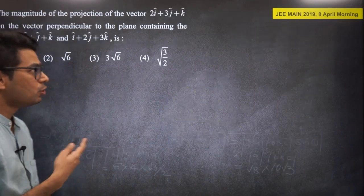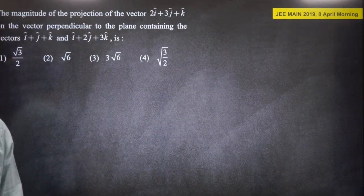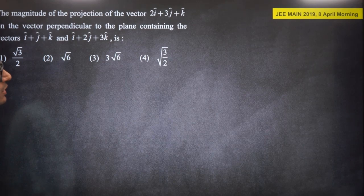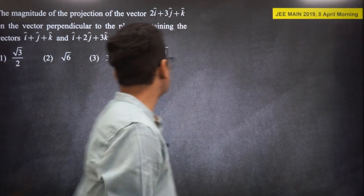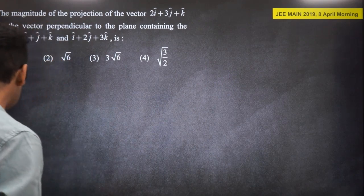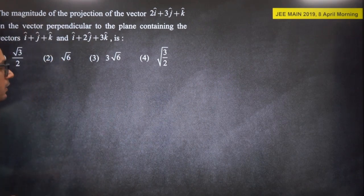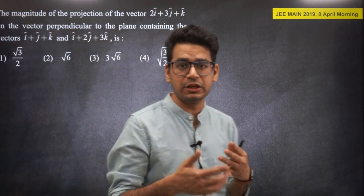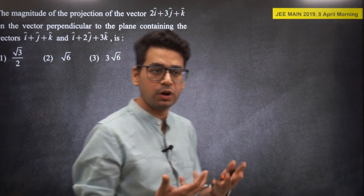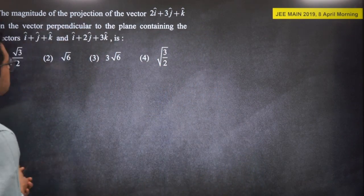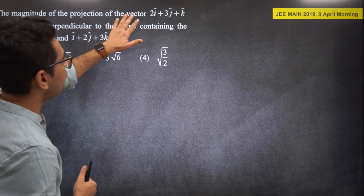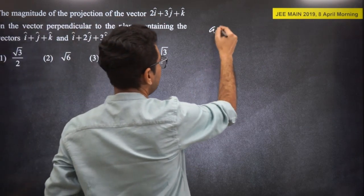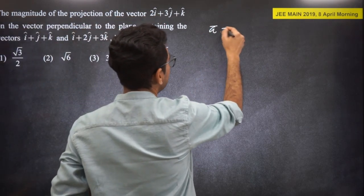Taking 15-20 more minutes for 2019 questions. Speed up! Hit the like button for energy. April 8th morning question: the magnitude of the projection of vector A = (2, 3, λ) on the vector perpendicular to the plane containing vectors B = (1,1,1) and C = (1,2,3).